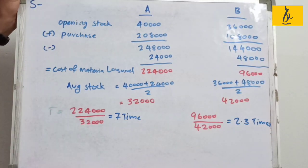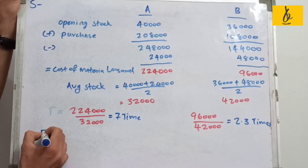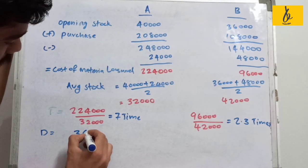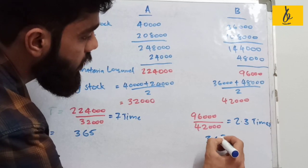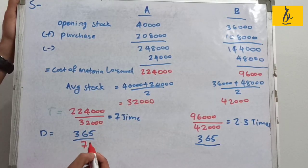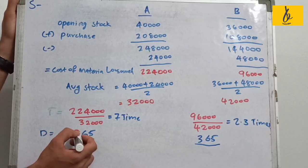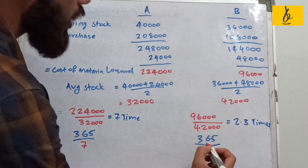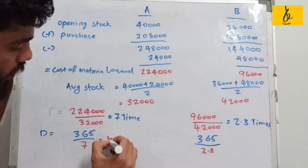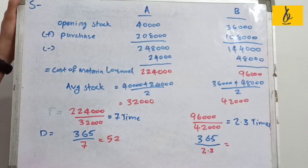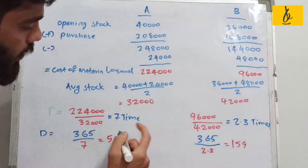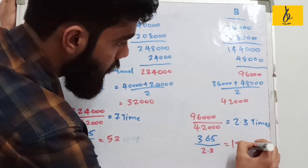Now we calculate the number of days. The equation is 365 divided by the inventory turnover ratio. For Material A: 365 divided by 7 = 52 days. For Material B: 365 divided by 2.3 = 159 days.